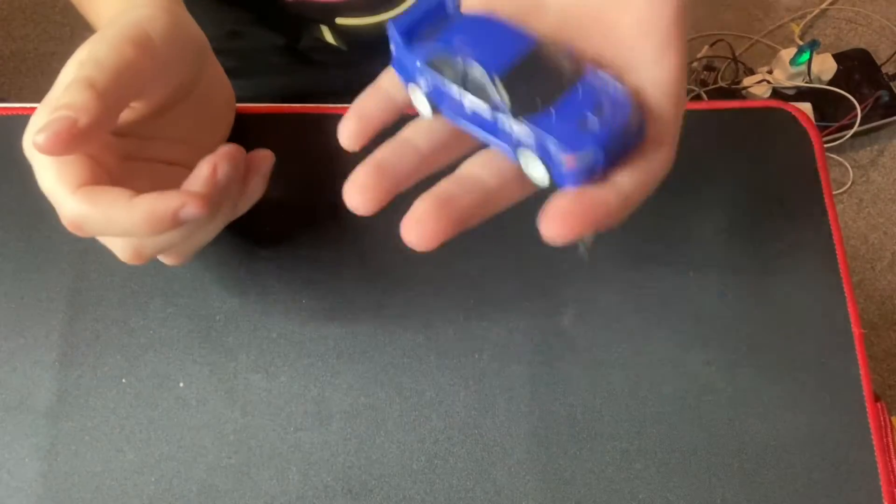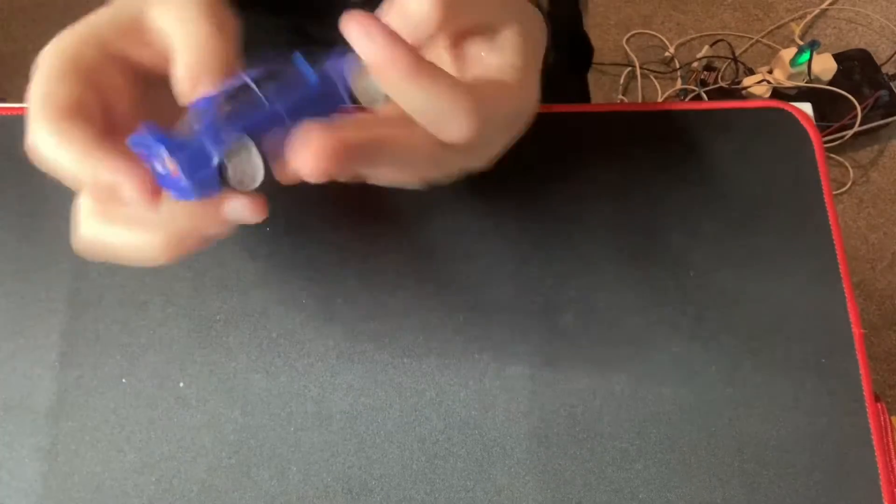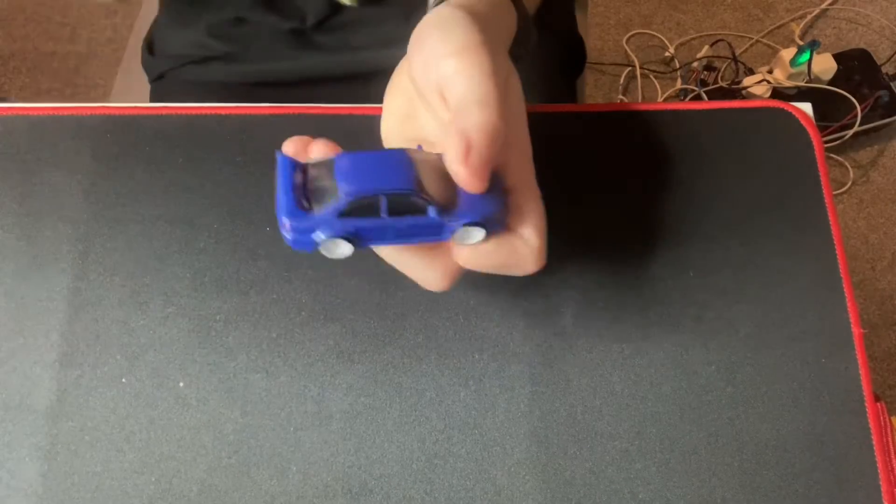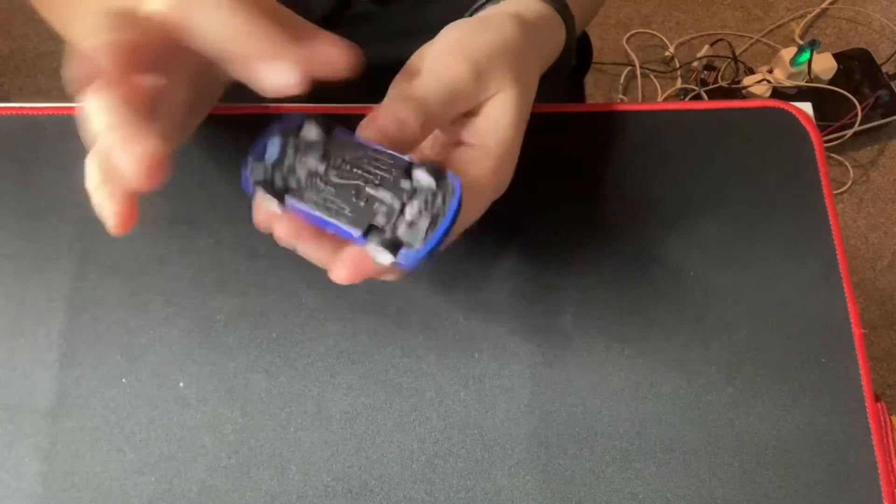This car is also really heavy because of the metal base and all the stuff inside. Because these wheels are actually quite heavy, the base is quite heavy, and on top you have the body, which is obviously metal.